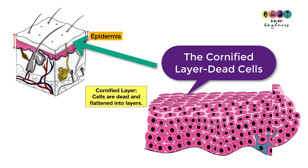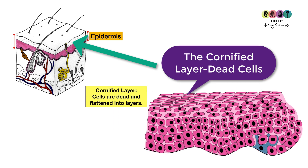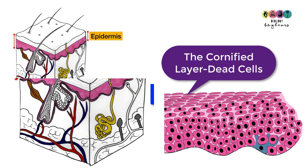By the time cells reach the cornified layer they are hardened, mostly consisting of keratin. They've lost their cytoplasm and their nucleus. So the cornified layer is basically many layers of dead, flattened skin cells.